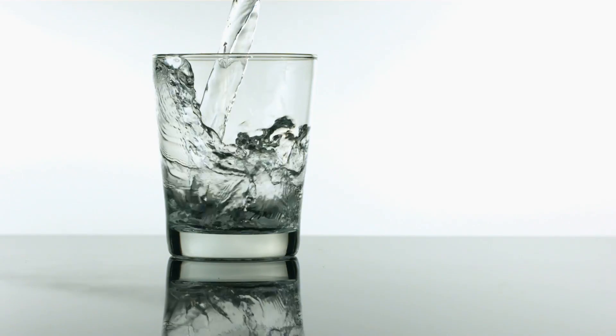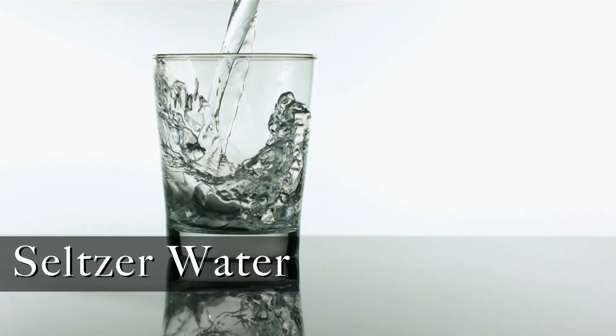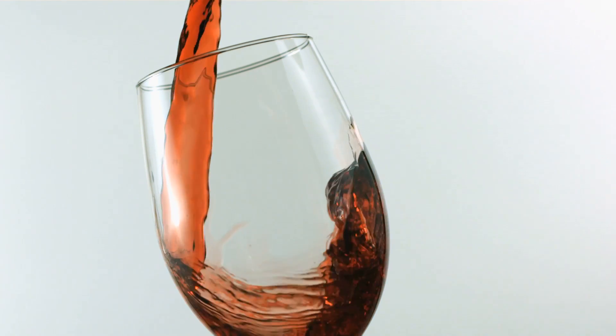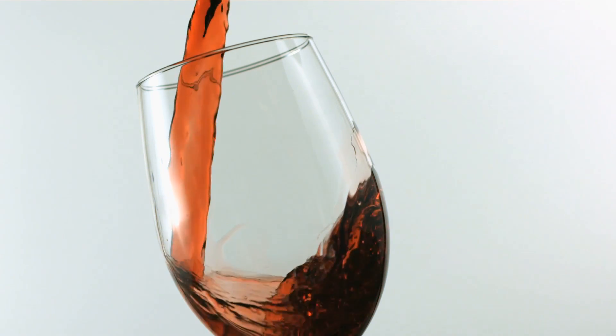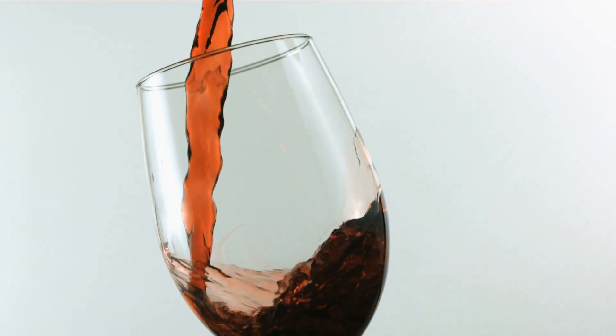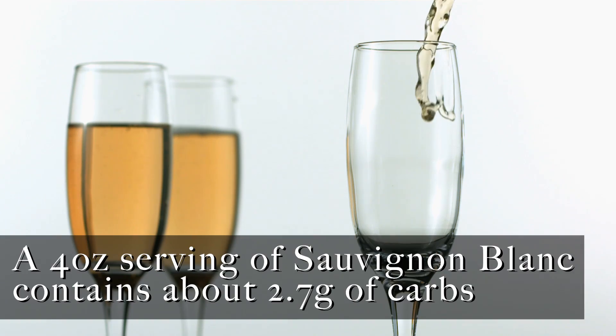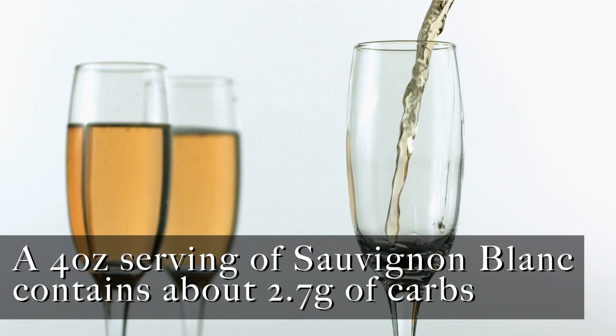As far as dilutants go, go with seltzer water. Triple distilled vodka with seltzer water would be a perfect drink when you're in ketosis. A lot of people ask about wines — believe it or not, red wine has antioxidants, but the antioxidant effect is so minimal it's practically a joke. You're better off going for the lower carbohydrate content of a white wine, like a Sauvignon Blanc. A simple four-ounce serving of Sauvignon Blanc only has about 2.7 grams of carbohydrates, so that might be the best choice.